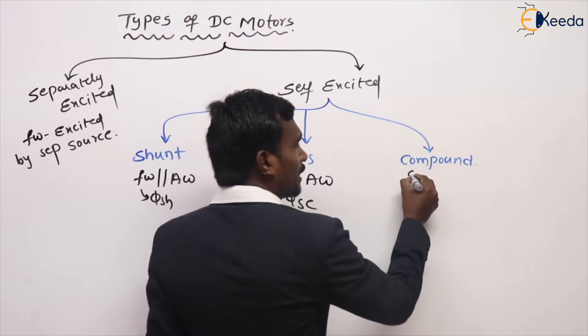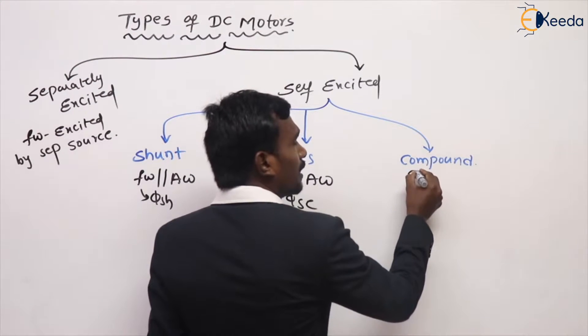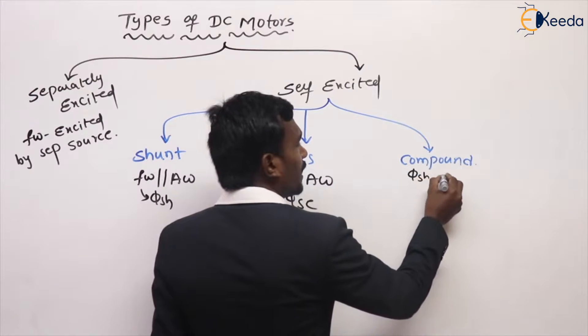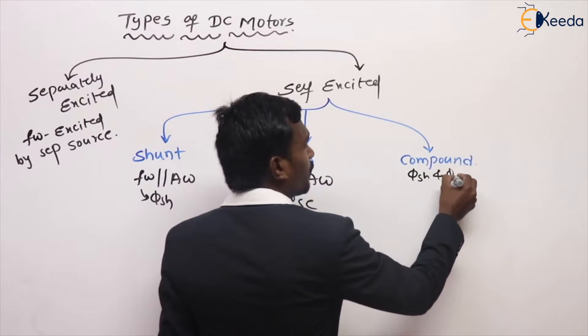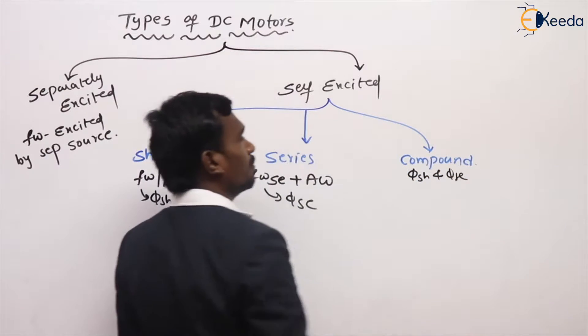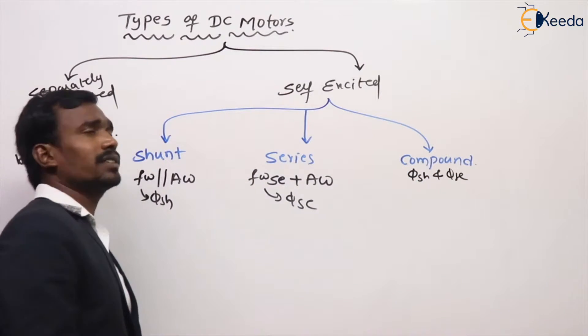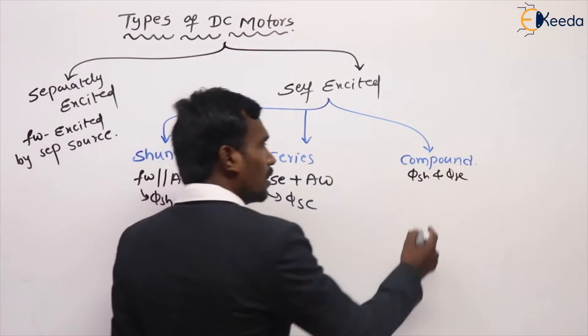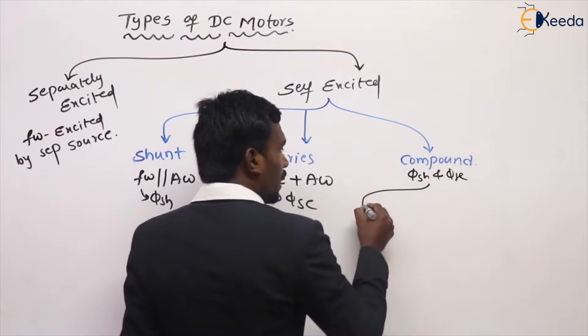Compound motor is the combination of shunt and series motors — that is, the combination of shunt field winding and series field winding.